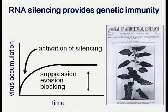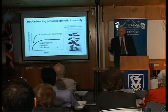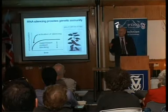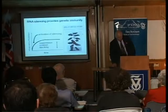Putting everything together, RNA silencing provides genetic immunity in plants and in some animals as well. As the virus begins to accumulate and replicate, it somehow generates double-stranded RNA, which feeds into the RNA silencing pathway. That silencing is then targeted back against the virus, so the rate of accumulation slows down and eventually stops. The extent to which a virus can accumulate in a plant is determined by the extent to which it can suppress, evade, or otherwise block the silencing process.